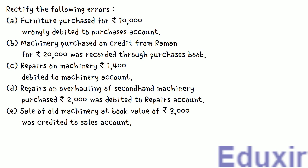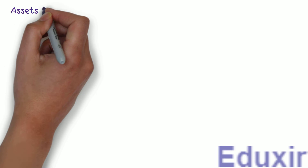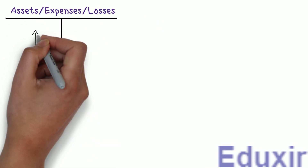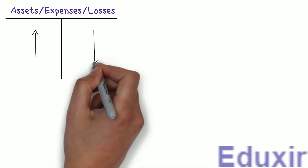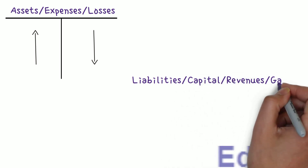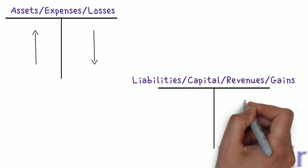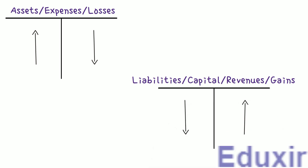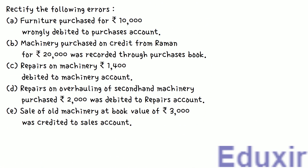Before we proceed with the analysis of these errors, let us first do a small recap. In case of assets, expenses, or losses, any increase in any of these should be debited and any decrease should be credited. Most of the details provided are enough for us to proceed without making any assumption, so let us skip directly to the analysis of the errors.